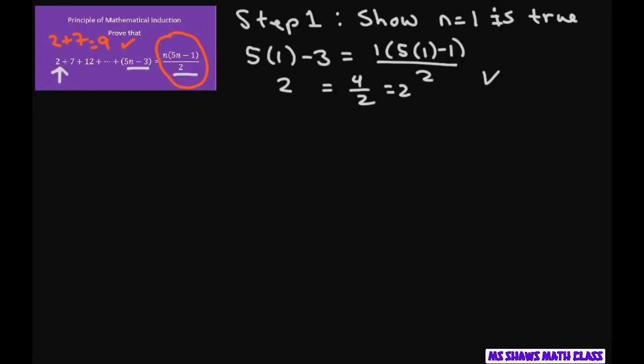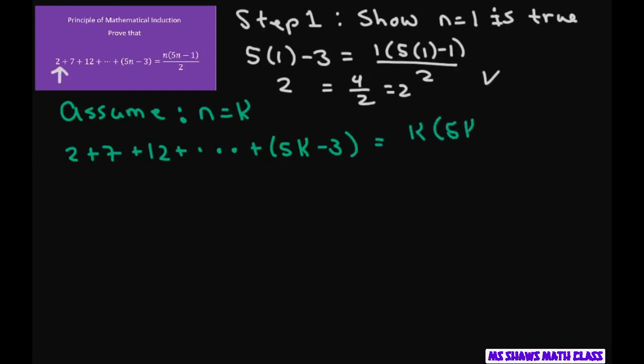So what we're going to do first is assume that it's true for n equals k. So we're going to take our formula here and change all the n's to k's. So you're going to write 2 plus 7 plus 12 plus dot dot dot center dots plus 5k minus 3 equals k times 5k minus 1 divided by 2.